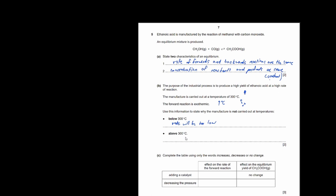Above 300°C, the reaction favors the reverse reaction more than the forward reaction. When you increase temperature in an exothermic system, the system wants to decrease temperature, so it favors the backward reaction. So above 300°C, the rate may be faster but you will have less yield of ethanoic acid.